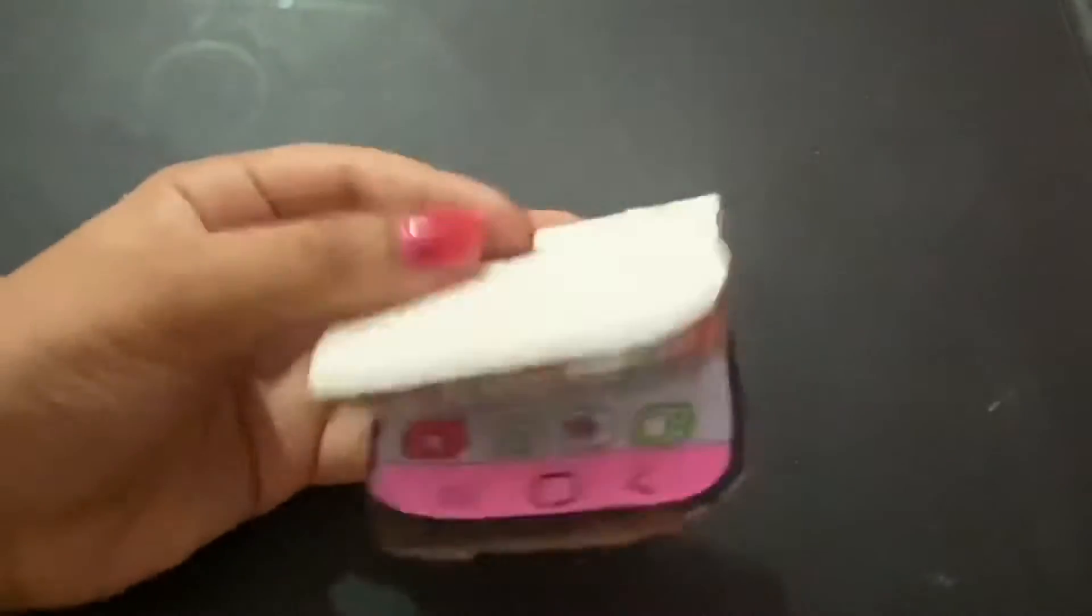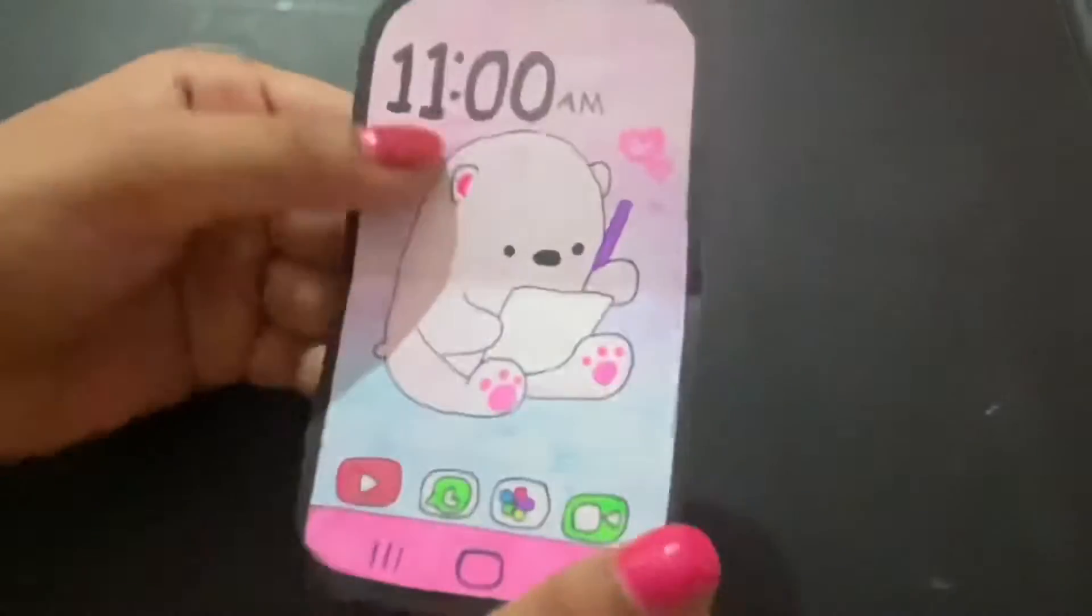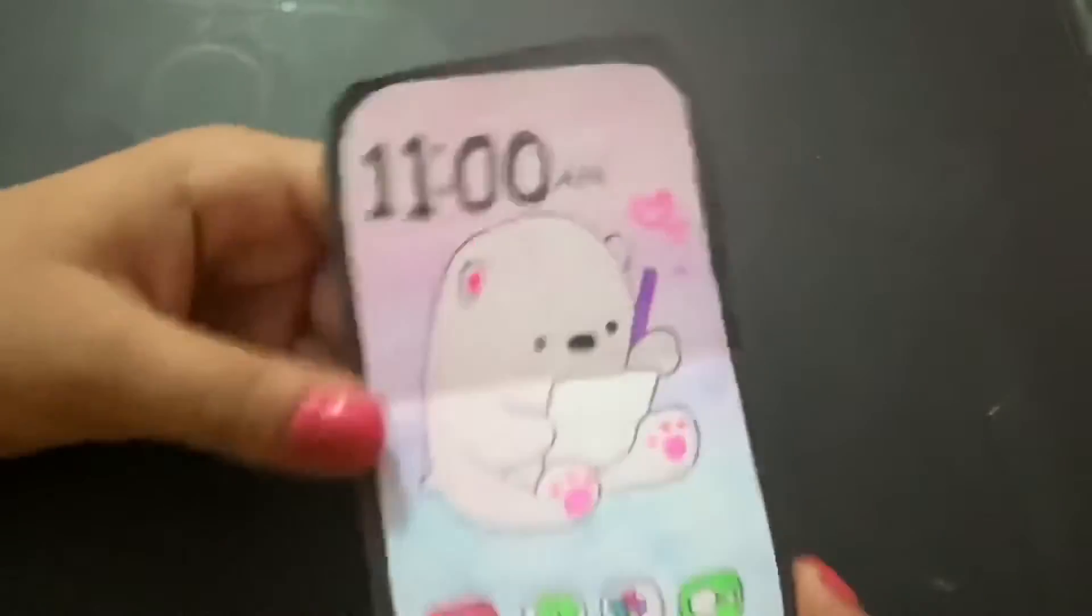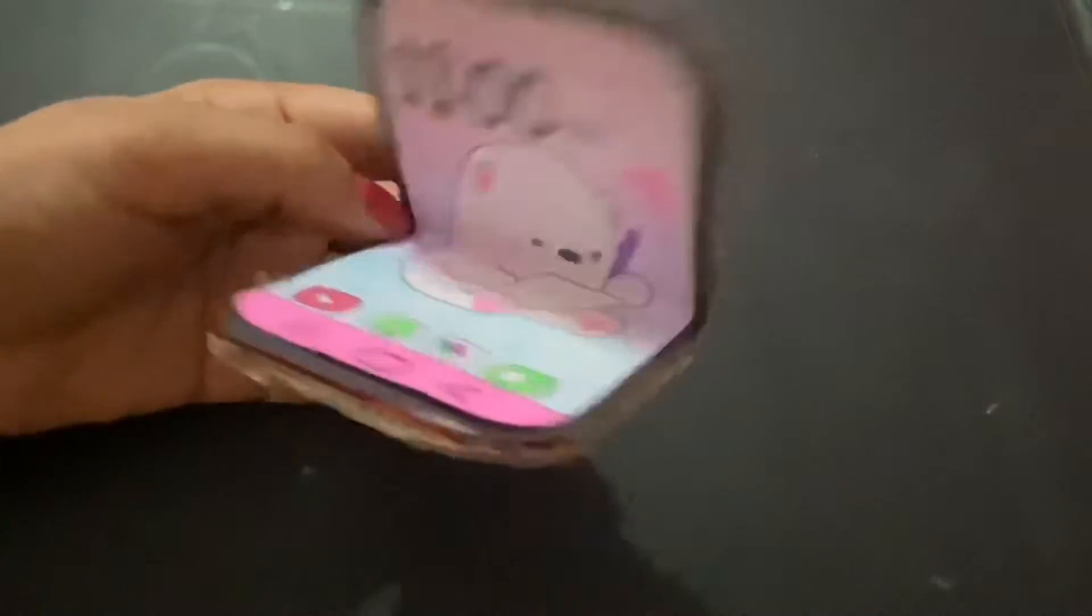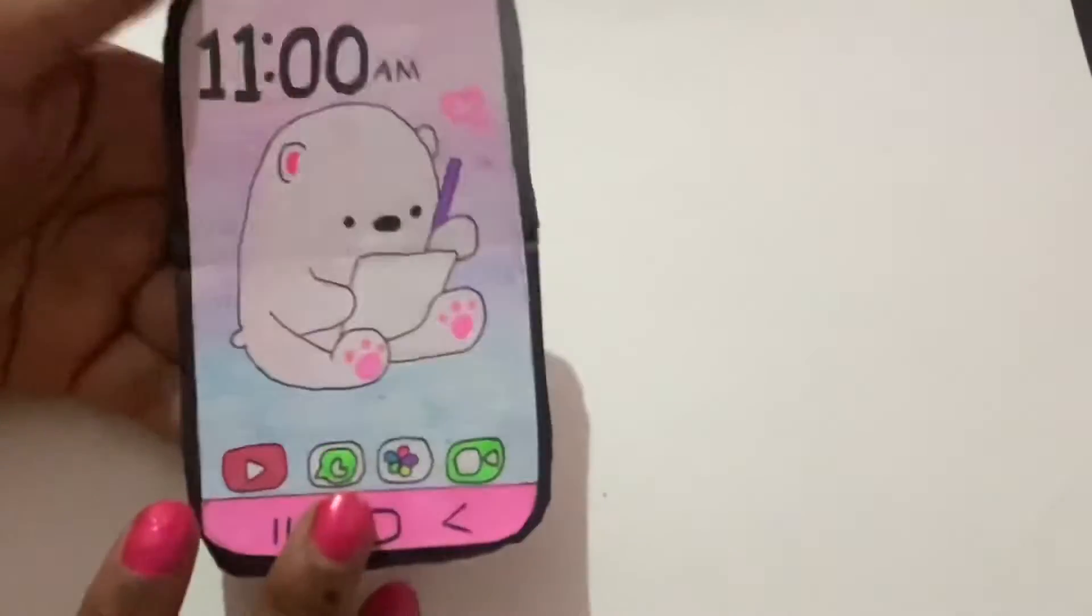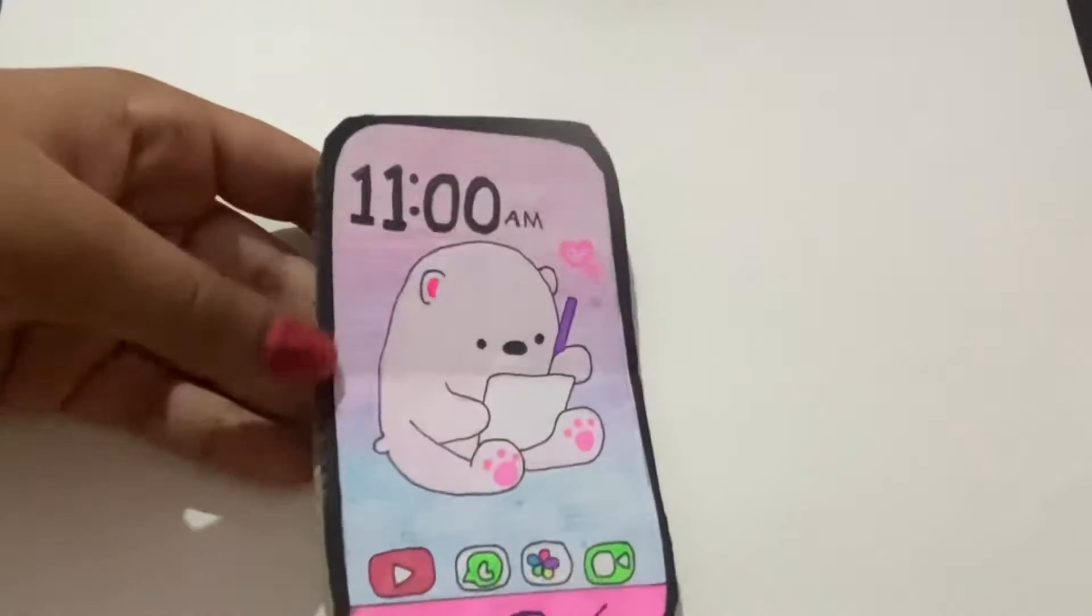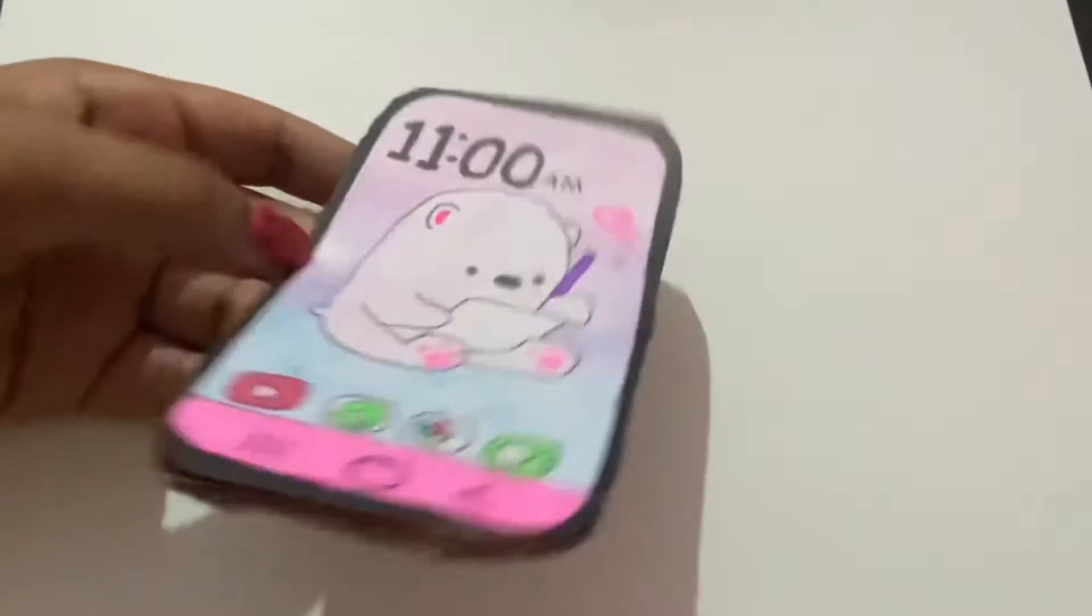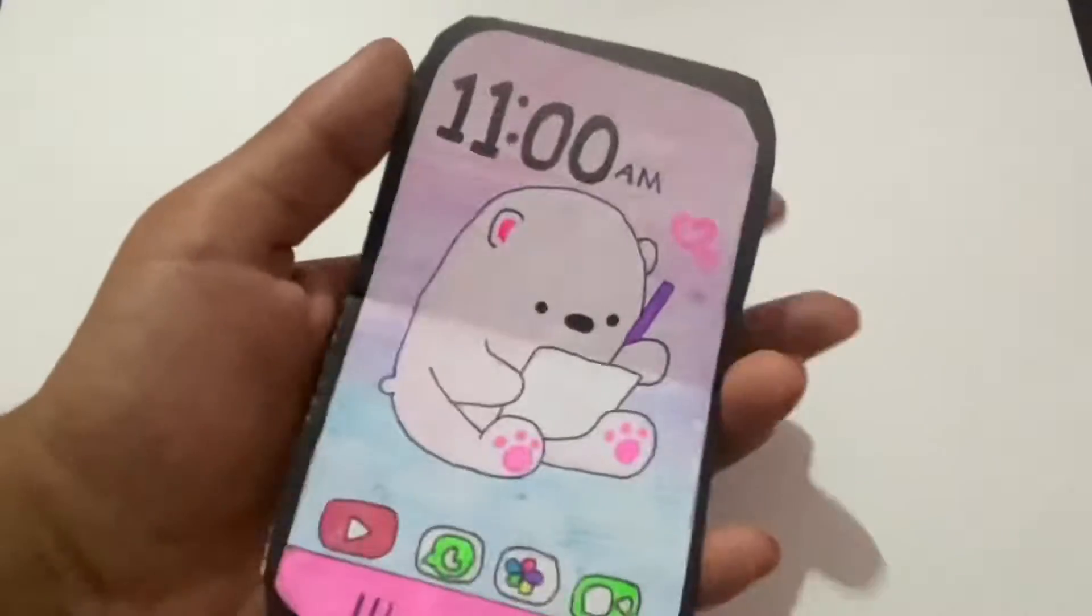I just love how the phone looks even though we haven't done the back yet. I really like how this looks. You just want to fold it to make sure, like this. I really love how it looks and now let's start decorating the back. I changed the background to white so you guys can see the phone better and I think it looks better like this.